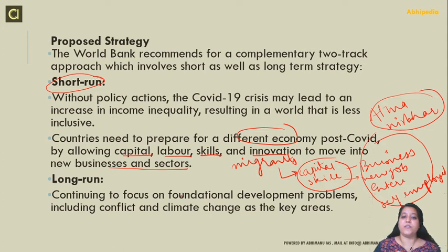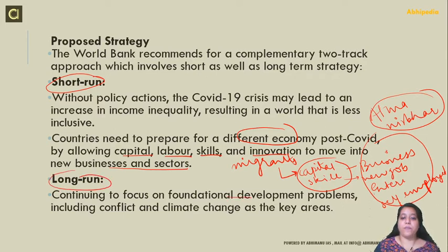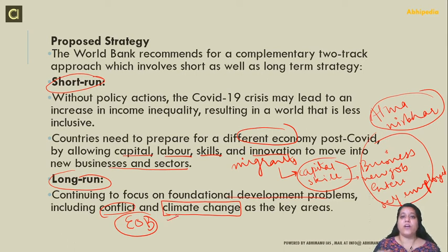It is also said in this report that because of COVID-19 and the crisis, we will see a rise in income inequality, so short-term policies must address inclusive growth. For the long run, we have to focus on developmental problems such as reducing conflict, improving ease of doing business, avoiding political conflict, and tackling climate change consequences — such as floods and droughts — to protect vulnerable populations.